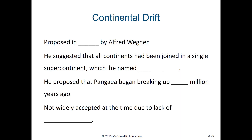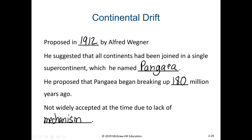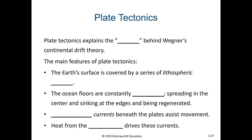In 1912, the theory of continental drift was proposed by a German geologist named Alfred Wegener. Wegener suggested that all continents had been joined in a single supercontinent, which he named Pangaea, and proposed that Pangaea began breaking up 180 million years ago. When he proposed this idea, it was not widely accepted, largely due to a lack of mechanism — he couldn't explain why continents were moving, especially when to everyone's observation they seemed solid and stationary. Plate tectonics explains the how behind Wegener's continental drift theory.